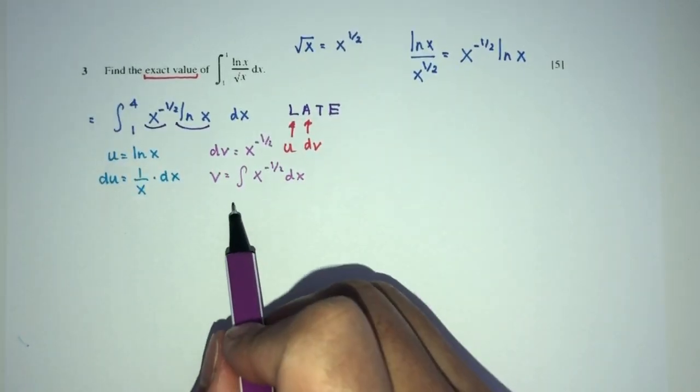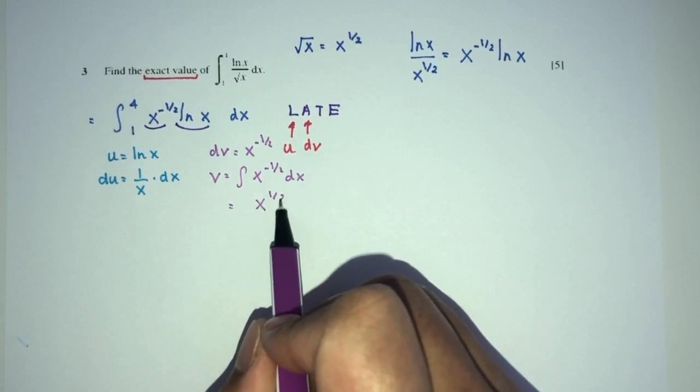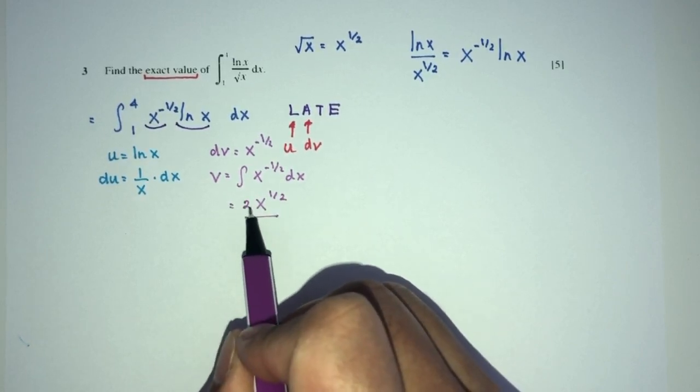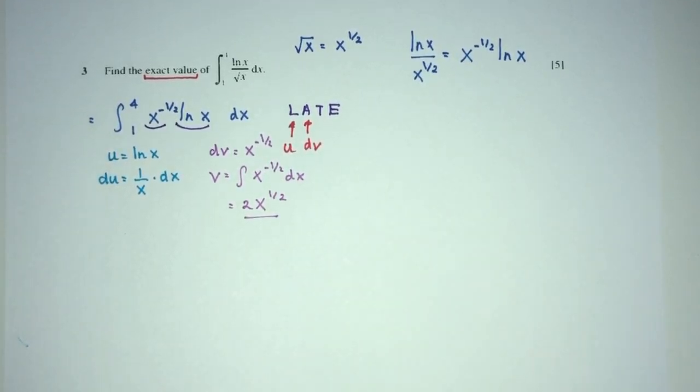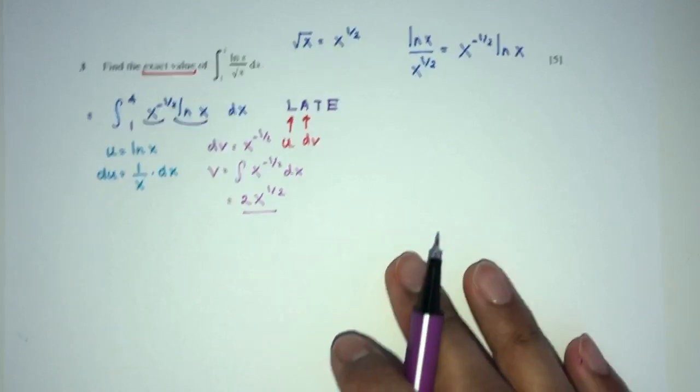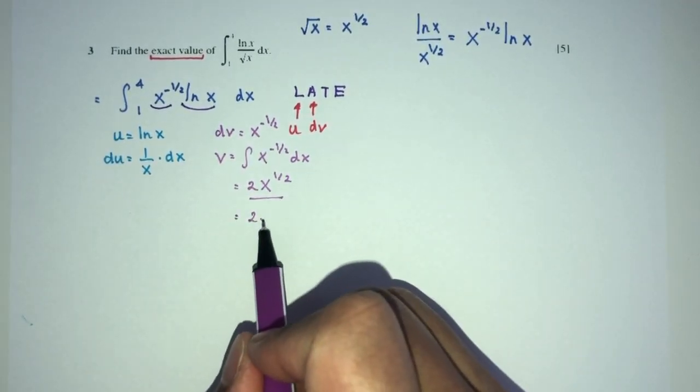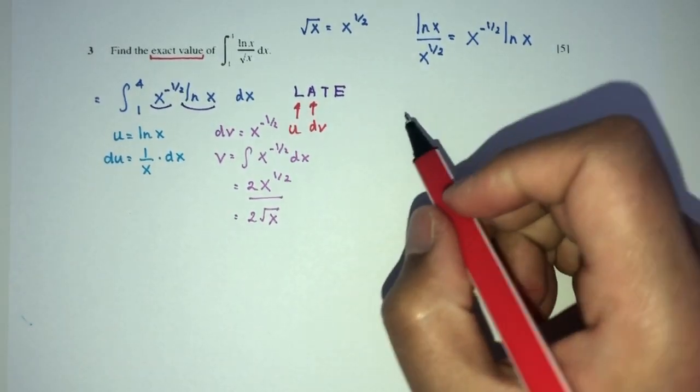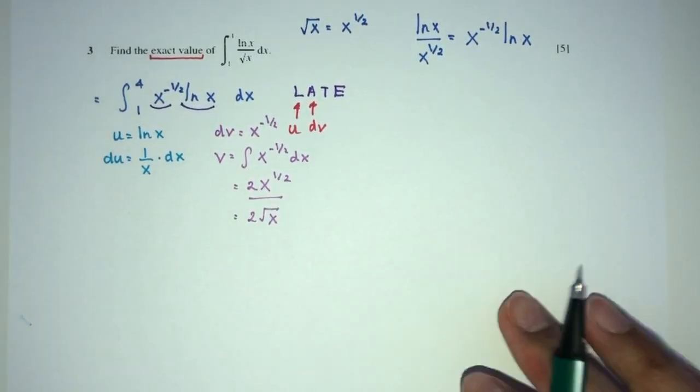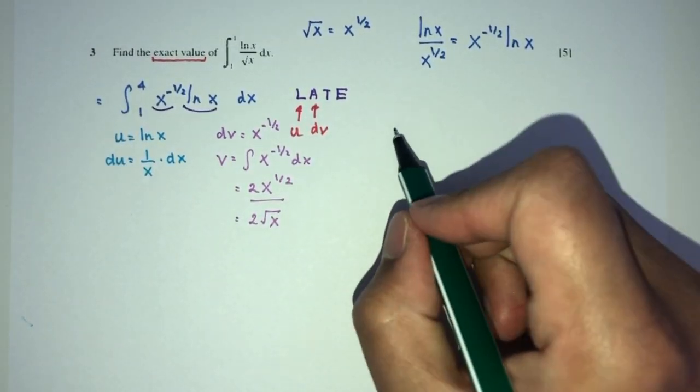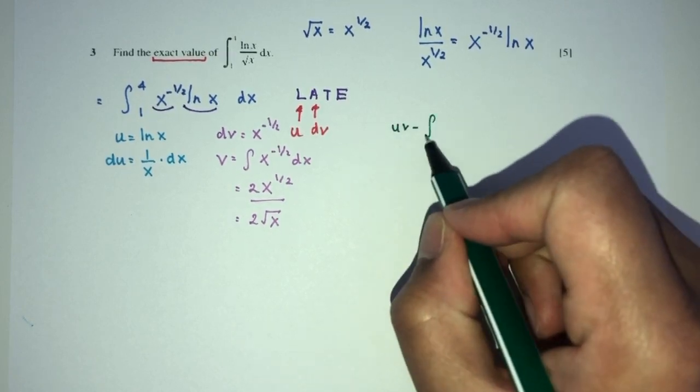First, we have to increase the power by 1. You will have x half. Then, divide by half will be multiplying by 2. So, divide by half is the same as saying times 2. That will be 2 root of x. Now, replace back in your main equation. We have to know by parts. It's only a formula we have to know, which is uv minus integration of v du.